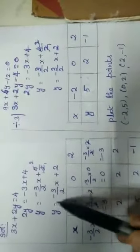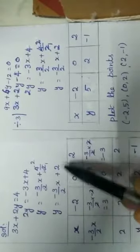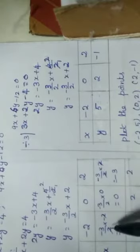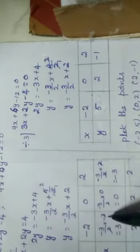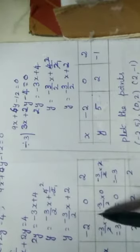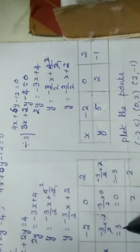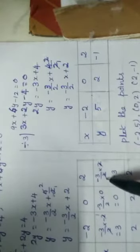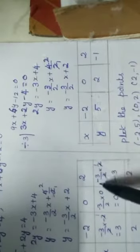Now, what is our first term? Minus 3 by 2x. So first we will find that. Minus 3 by 2 into x, we will find that. When x is minus 2, minus 3 by 2 into minus 2, 2 cancels, so you get minus 3 into 1, minus 3.